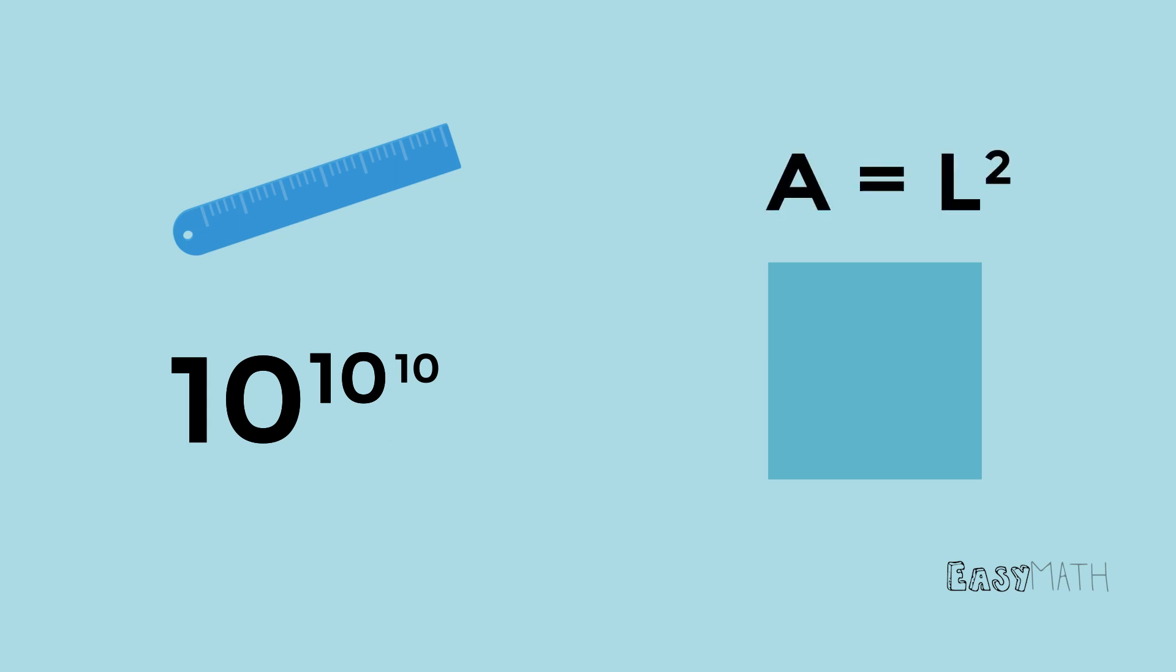What is an exponent? Let's look at an example to answer this question. Take 2 to the power of 3. 3 is the exponent, and all it means is that the 2 is being multiplied by itself 3 times.